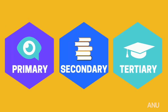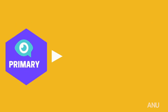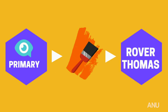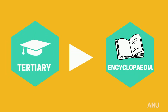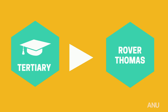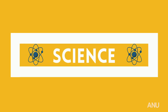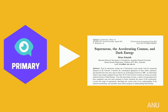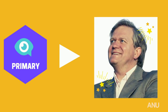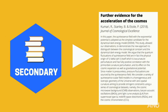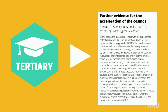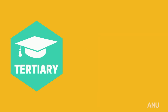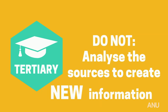Primary, secondary, and tertiary sources can look different depending on your discipline. In arts and social sciences, a primary source could be a painting by Indigenous Australian artist Rover Thomas. A secondary source could be a book about Rover Thomas and his work. A tertiary source could be an encyclopedia entry about Rover Thomas or referencing the book written about him. In science, a primary source could be the 2012 paper 'Supernovae, the Accelerating Cosmos, and Dark Energy' by Brian Schmidt and Thierry Monmel. A secondary source could be an article discussing this research, while a tertiary source could consist of an abstract that describes the paper's findings but provides no additional analysis. Tertiary sources do not analyse the sources to create new information, and that is a key difference.